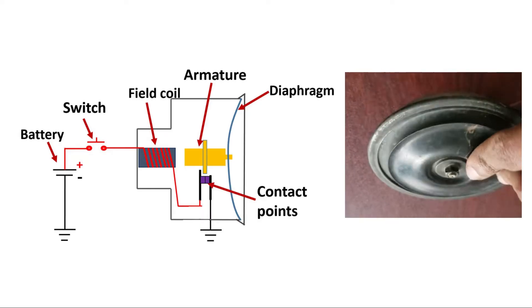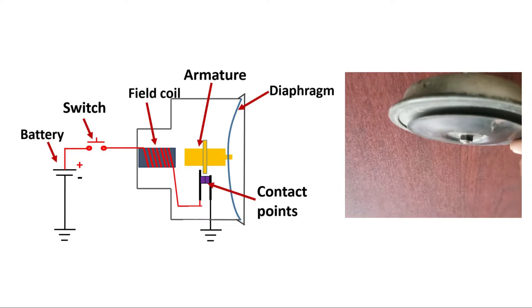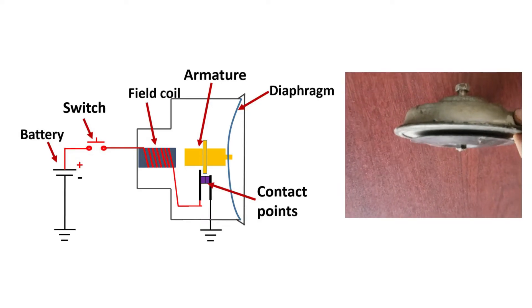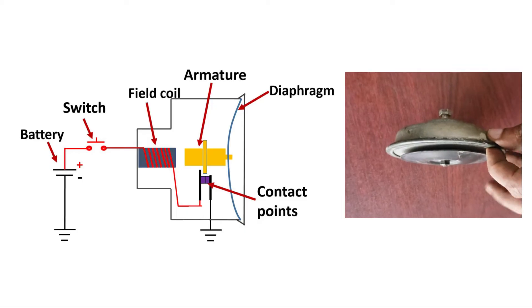Most electrical horns consist of an electromagnet, a movable armature, a diaphragm, and a set of normally closed contact points.